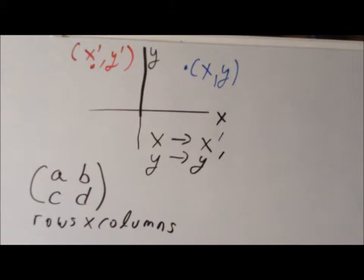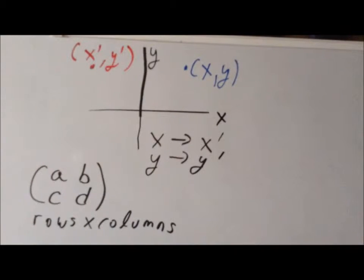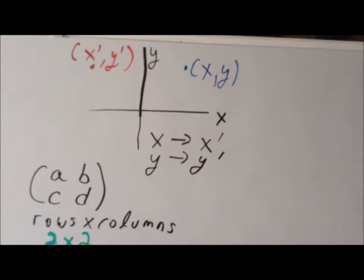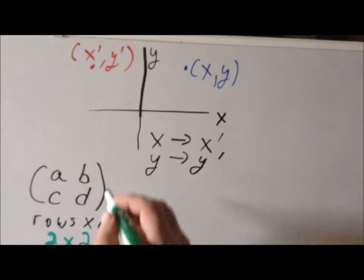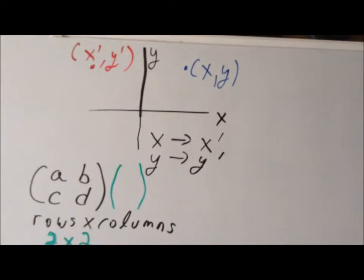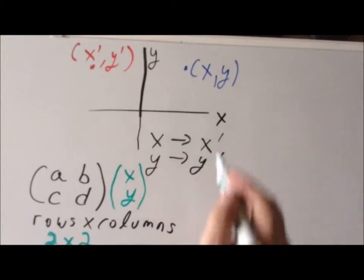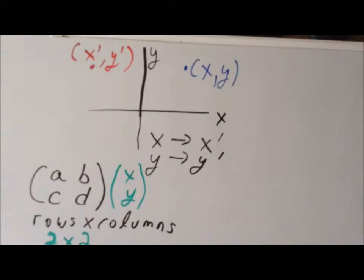The two rows are: the first row is A, B, and the second row is C, D. The first column is A, C, and the second column is B, D. Matrices are useful because we can use them to write in condensed form a series of equations. When talking about two-dimensional space, we refer to the point as a column matrix — a two by one matrix — with the first row being X and the second row being Y.